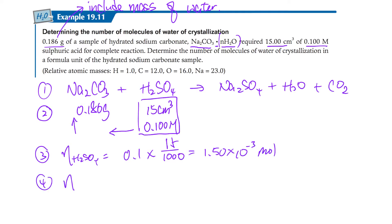And then by mole ratio, we can find the sodium carbonate one. It will be 1.50 times 10 to negative 3 divided by 1 times 1, because you have 1.50 times 10 to the negative 3 mole.